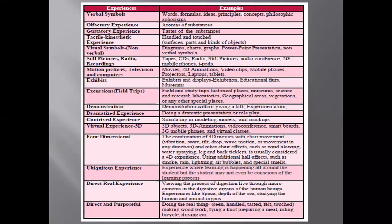The fourth is tactile or kinesthetic experience, where one has to handle or touch materials to learn — it may be surfaces or parts of objects provided to learners. That is a sort of learning-by-doing experience. The fifth is visual symbols — visually we grasp and take in information with the help of our eyes. It may be through still pictures, audio conference, or radio tapes. Listening involves the ears — that is radio and recordings. And for motion pictures, television, and computers, we require two sense organs: watching and listening.